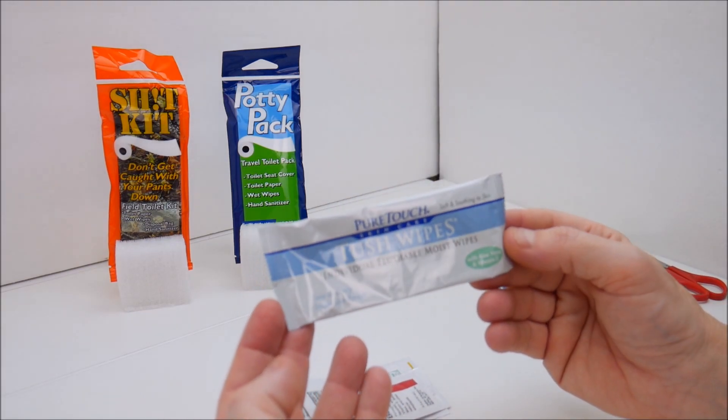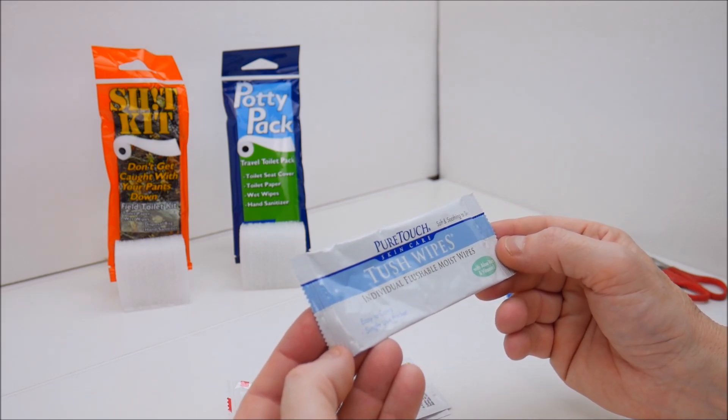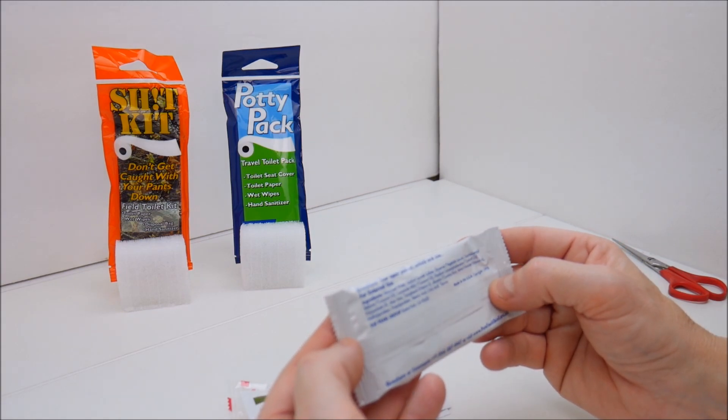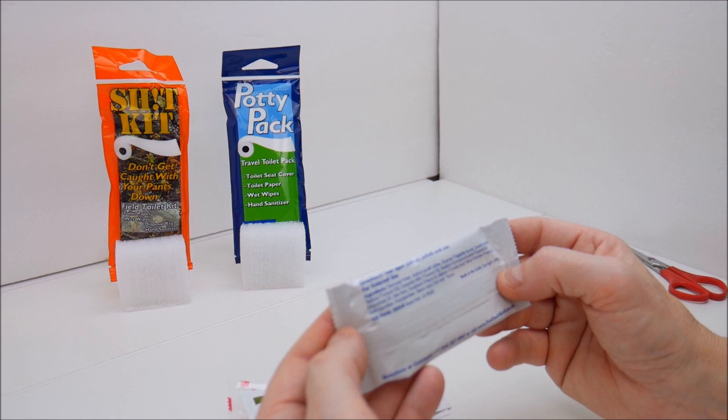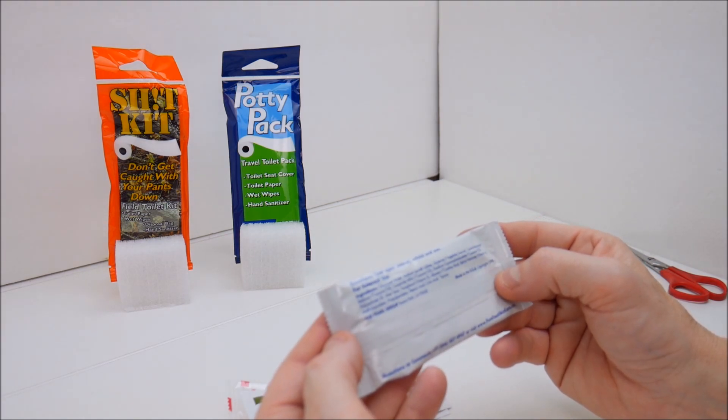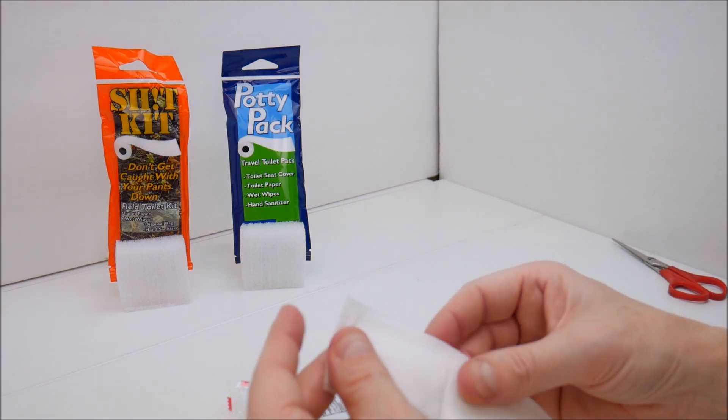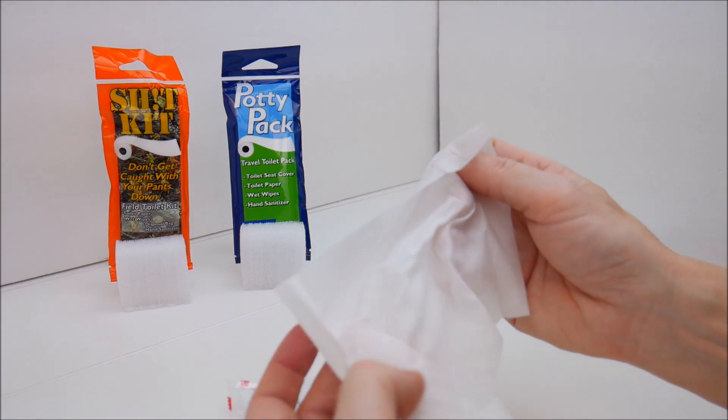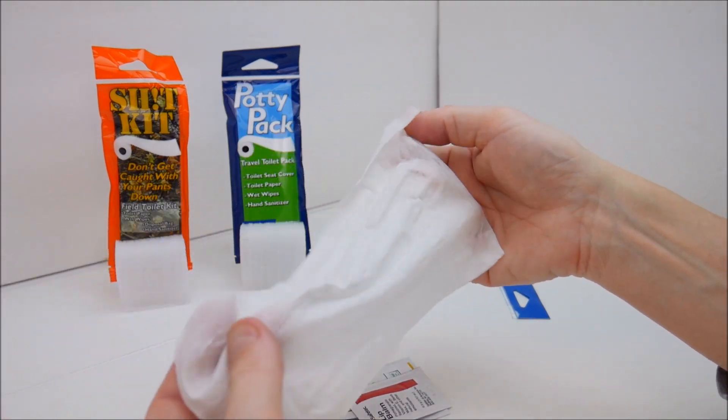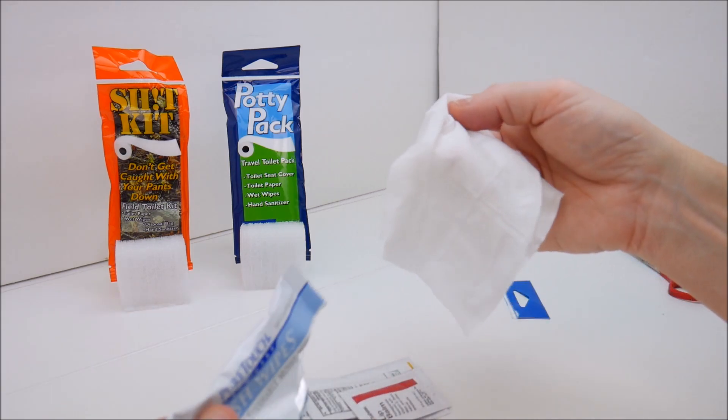Let's take a look at our Pure Touch tush wipes. These are made in the USA. It's got coconut oil, aloe vera, vitamin E, vitamin A, deionized water, sodium laureth sulfate, and some other things I can't pronounce. These are the wet wipes. They kind of smell like baby powder if you've ever smelled baby powder before. Not offensive. White wipe on a white background doesn't show up too well, but they're moist and smell fairly pleasant.